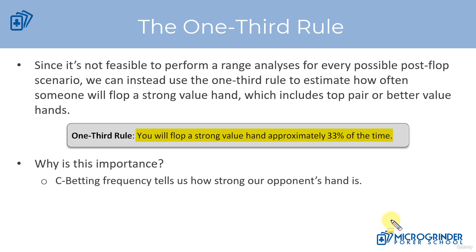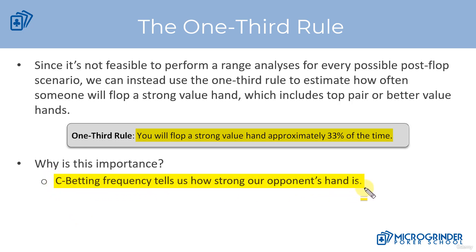Why is this important? We know from the last video that different ranges connect at different frequencies on different board textures, but this also goes hand-in-hand with the pre-flop raiser's c-betting frequency, because this gives us insight into how strong their hand is based upon how often they're c-betting.